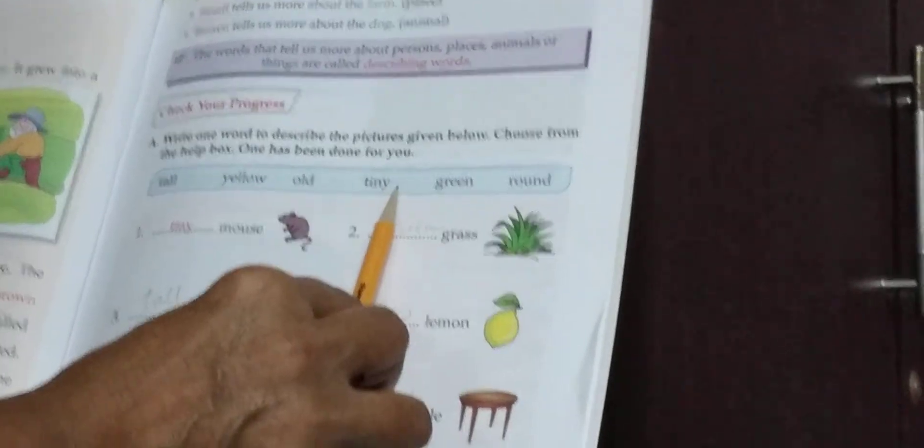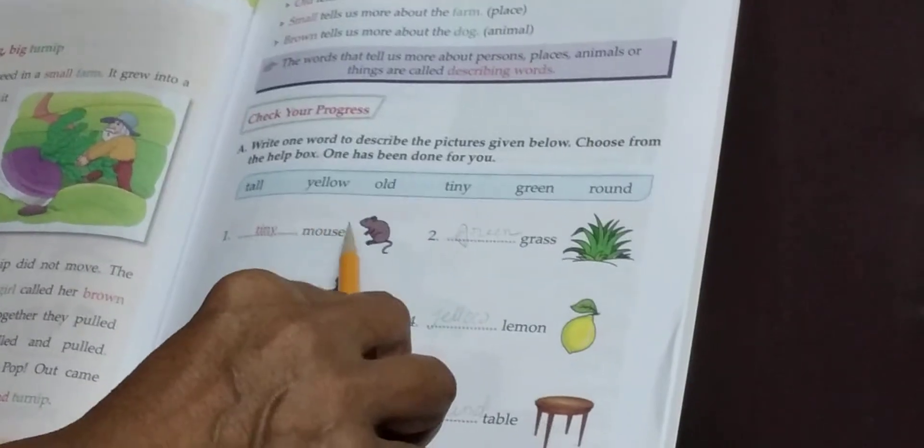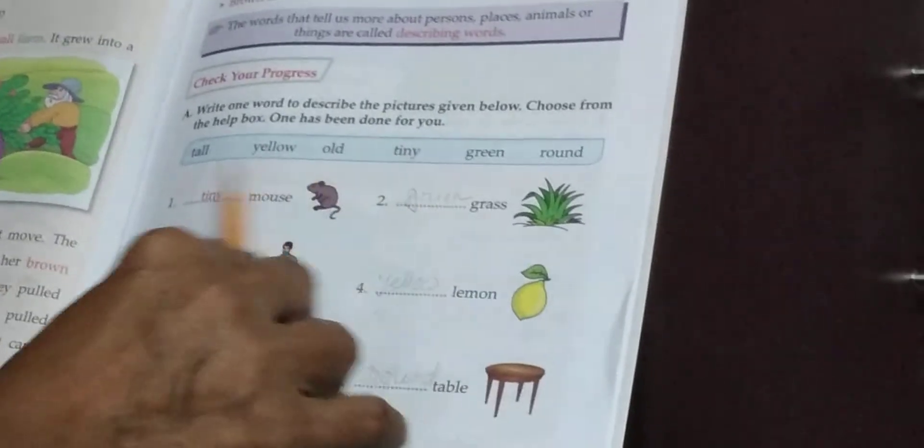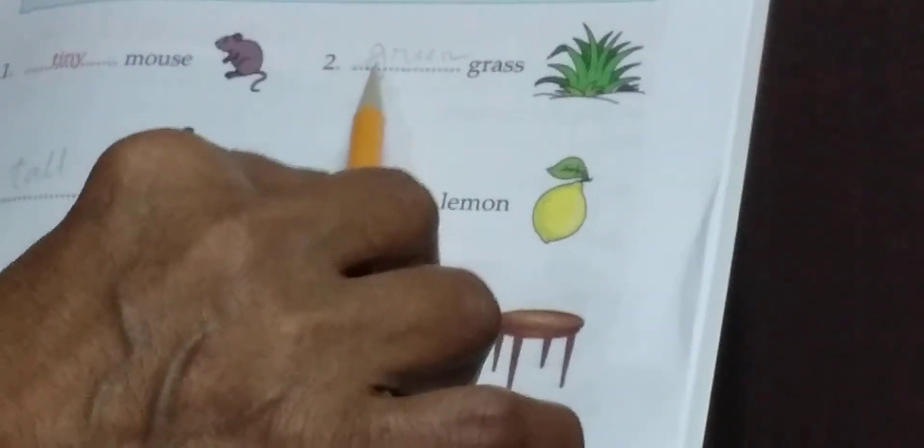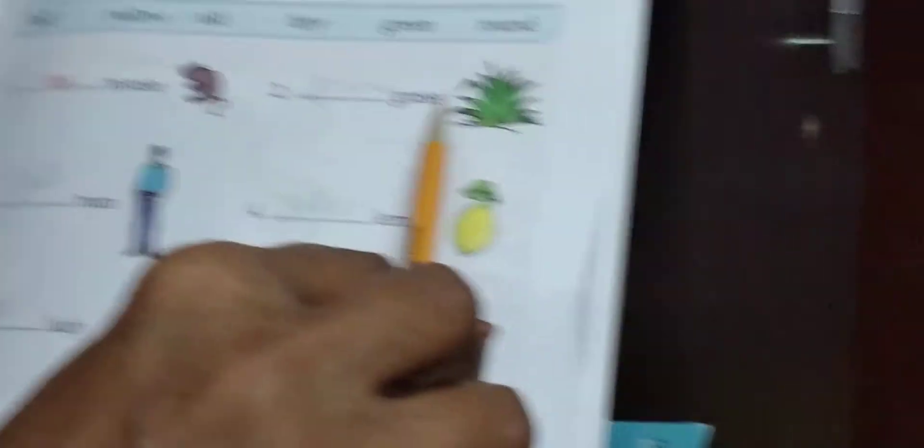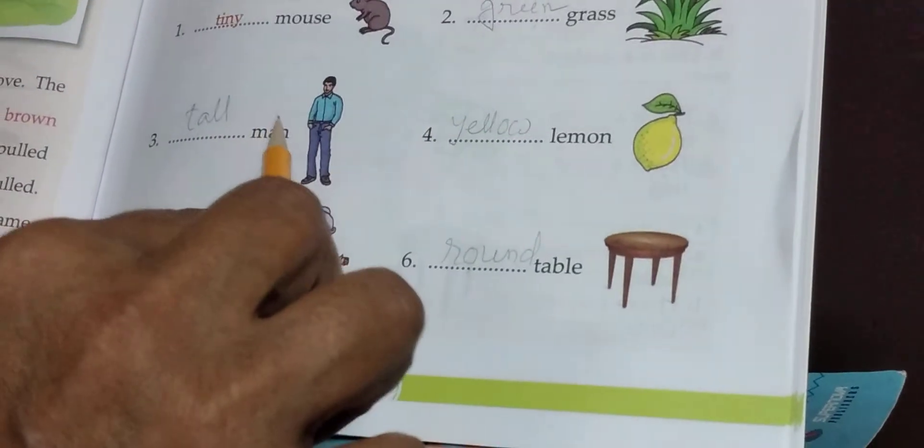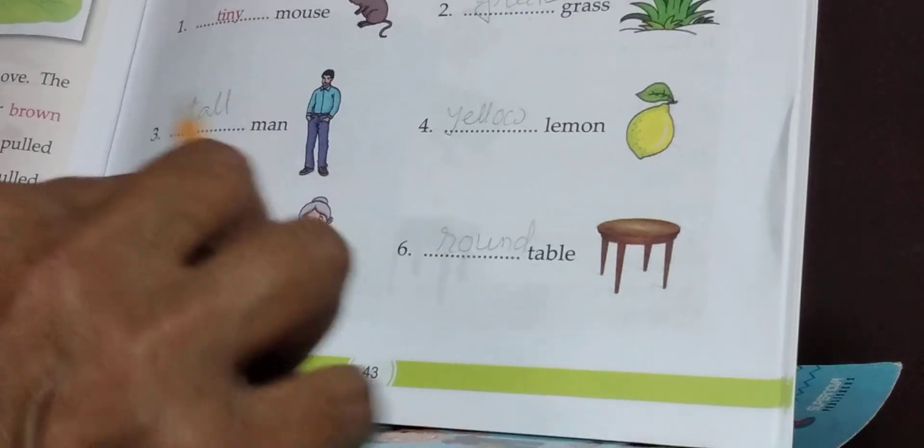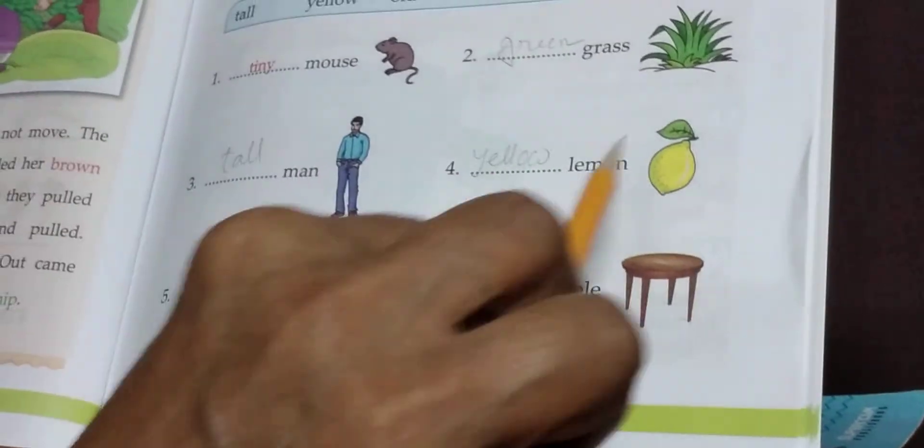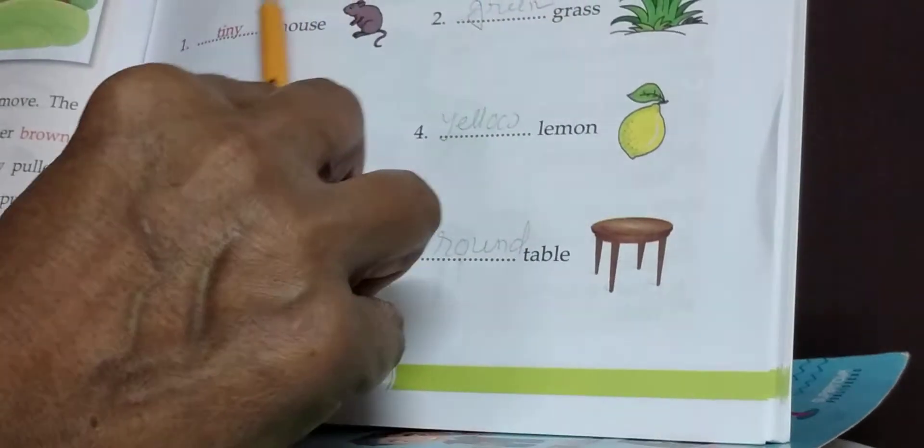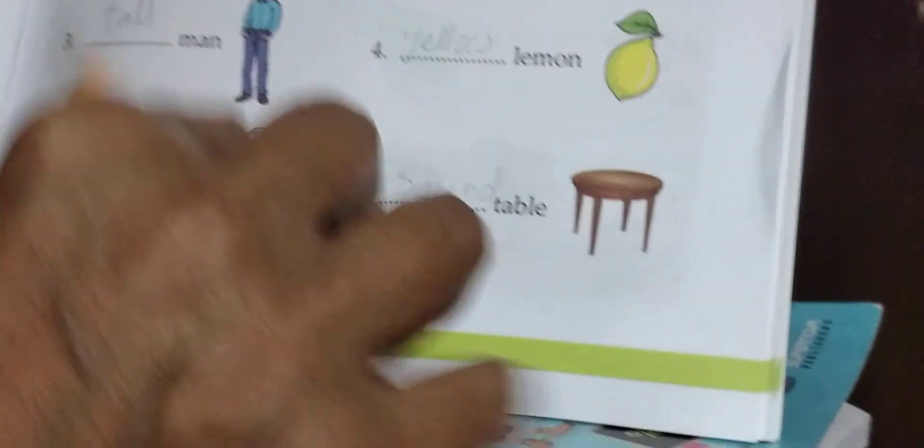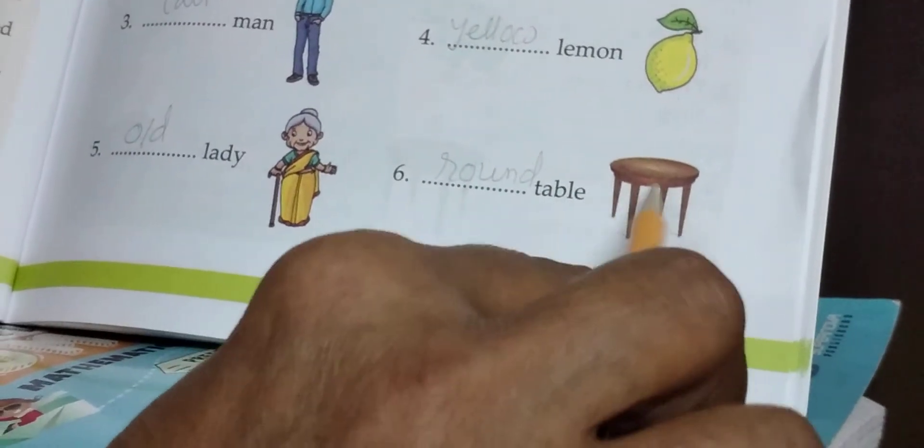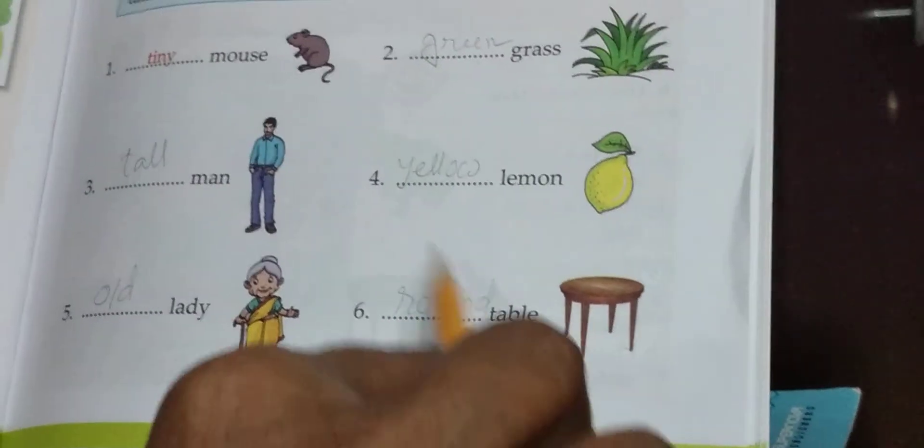Number one: tall man. Number two: green grass. Number three: tall man. Number four: lemon. Lemon's describing word is yellow. Fill in the blanks with yellow. Yellow lemon. Next five: lady. Lady's describing word is old. Fill in the blanks with old. Old lady. Next six: table. Table's describing word is round. Fill in the blanks with round. Round table.